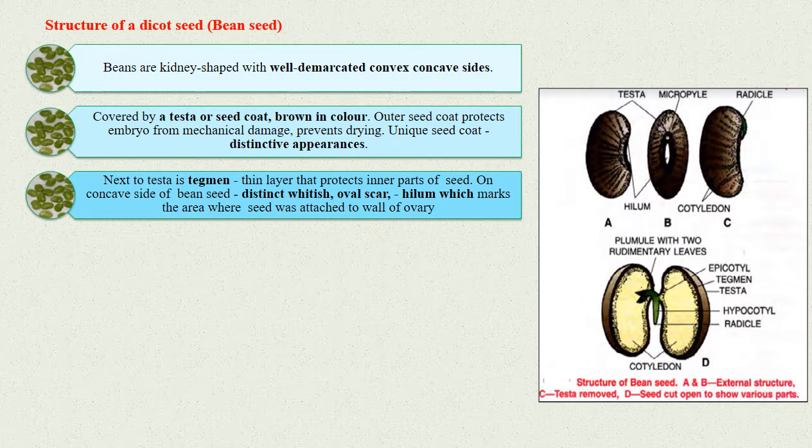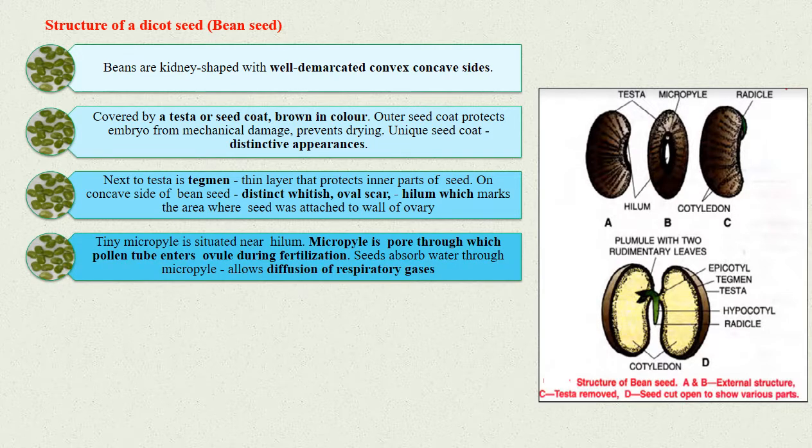If you look at the concave side of the bean seed, you will find a distinct whitish oval scar, which is called hilum. Hilum marks the area where the seed was attached to the wall of the ovary. A tiny micropyle is also situated near the hilum.